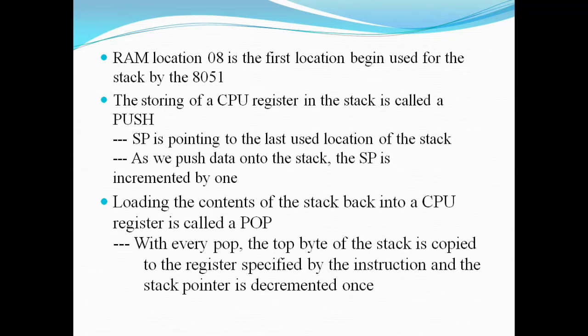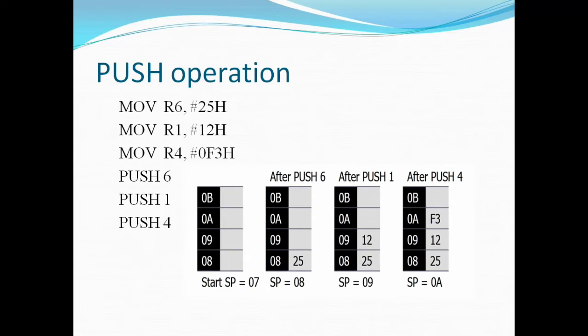Let us understand how data gets saved onto the stack using the push instruction and retrieved using the pop instruction. Here is a small code: three MOV instructions are written first. The first copies data 25H to register R6, the second copies 12H into register R1, and the third copies F3H into register R4. After that, three push instructions are written: PUSH 6, PUSH 1, and PUSH 4.